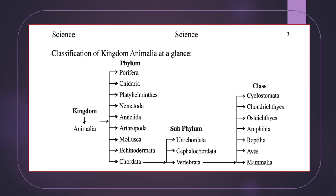Classification of Kingdom Animalia: all animals belong to Kingdom Animalia. Kingdom Animalia is divided into nine phyla: Porifera, Cnidaria, Platyhelminthes, Nematoda, Annelida, Arthropoda, Mollusca, Echinodermata, and Chordata. Phylum Chordata is divided into three subphyla: Urochordata, Cephalochordata, and Vertebrata. Subphylum Vertebrata is further divided into seven classes: Cyclostomata, Chondrichthyes, Osteichthyes, Amphibia, Reptilia, Aves, and Mammalia.